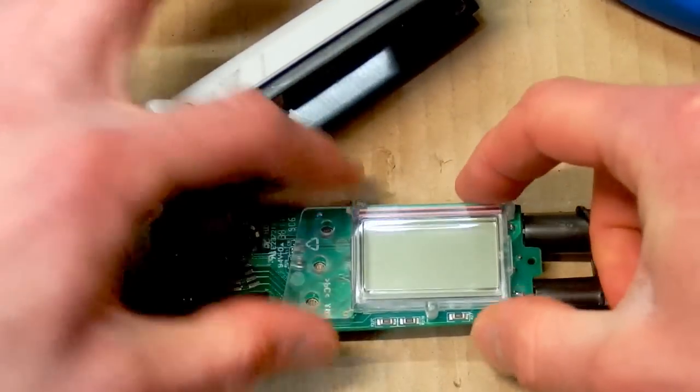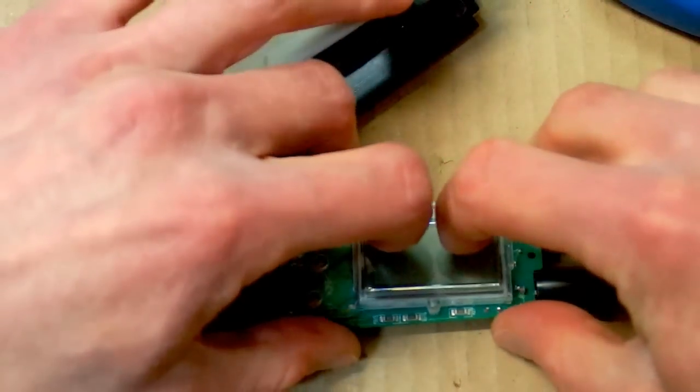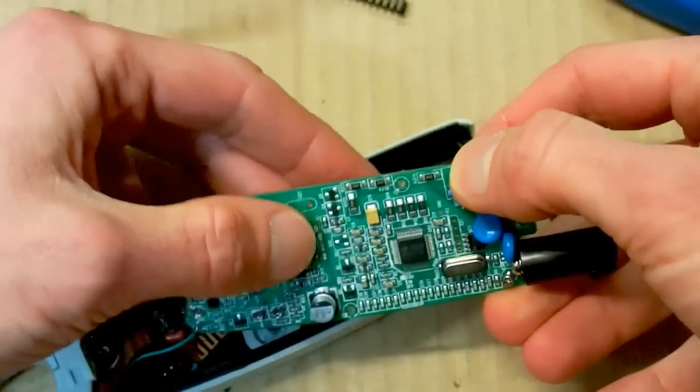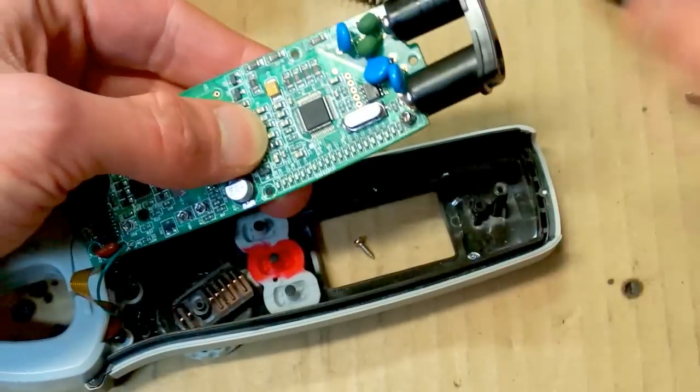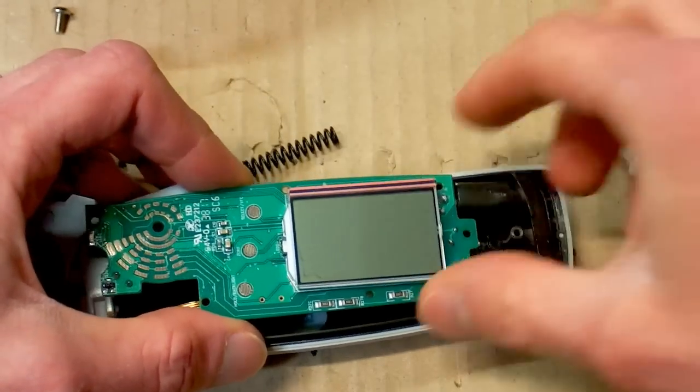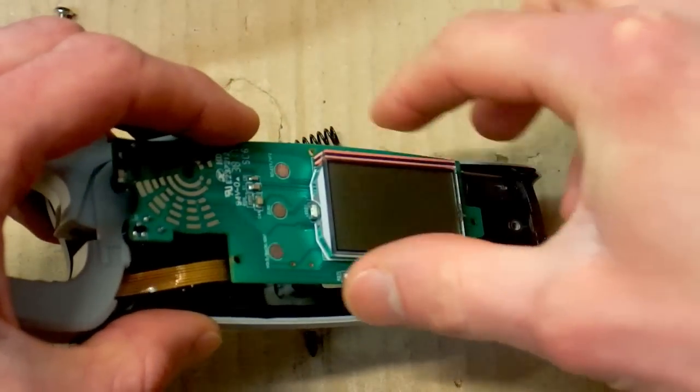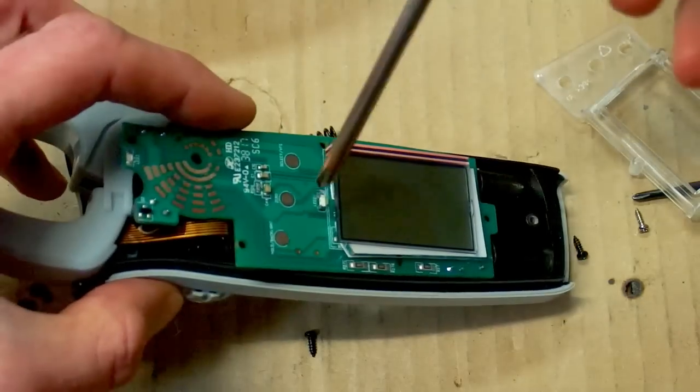And the board just comes out. Here is the display. Oh, I shouldn't have removed the shiny screws because it's holding the display, not the board in it. But anyway. Here is the display. With some backlight. It's this LED.